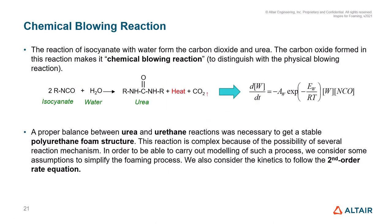Now let us look at the chemical reaction. The reaction of isocyanate with water leads to the formation of carbon dioxide, urea, and the generation of heat. The water reacts with the polyisocyanate to form polyurea and carbon dioxide, which serves as a co-blowing agent or can also be the sole blowing agent. The carbon dioxide formed in this reaction is known as the chemical blowing reaction. A proper balance between the urea and urethane reactions is necessary to get a stable polyurethane foam structure.